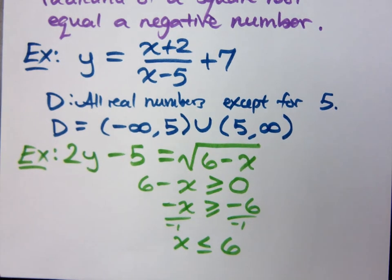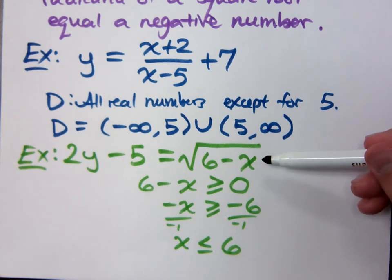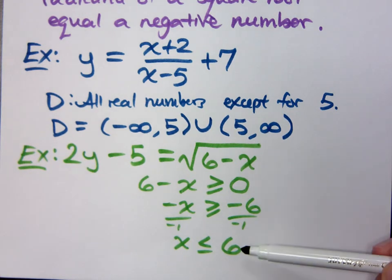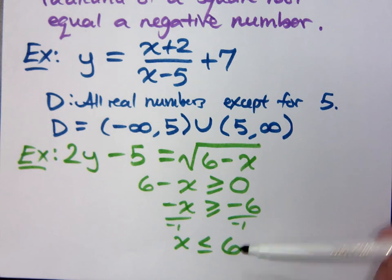So it's not just what makes this equal to zero, which is six. But you have to understand what can you use, what can you not use. So as long as I use x's that are less than or equal to six, I'm okay here. So how do you express that with your domain?